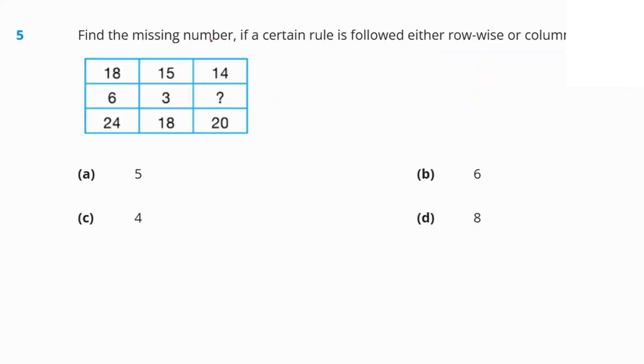Question number five, we have to find the missing number in such a way that a certain rule is followed row-wise and column-wise. What can be the rule over here? Let's try adding up first. Let's do it column-wise. 18 plus 6 is 24, 15 plus 3 is 18, so 14 plus how much gives you 20? 14 plus 6, so 6 is the answer option B.